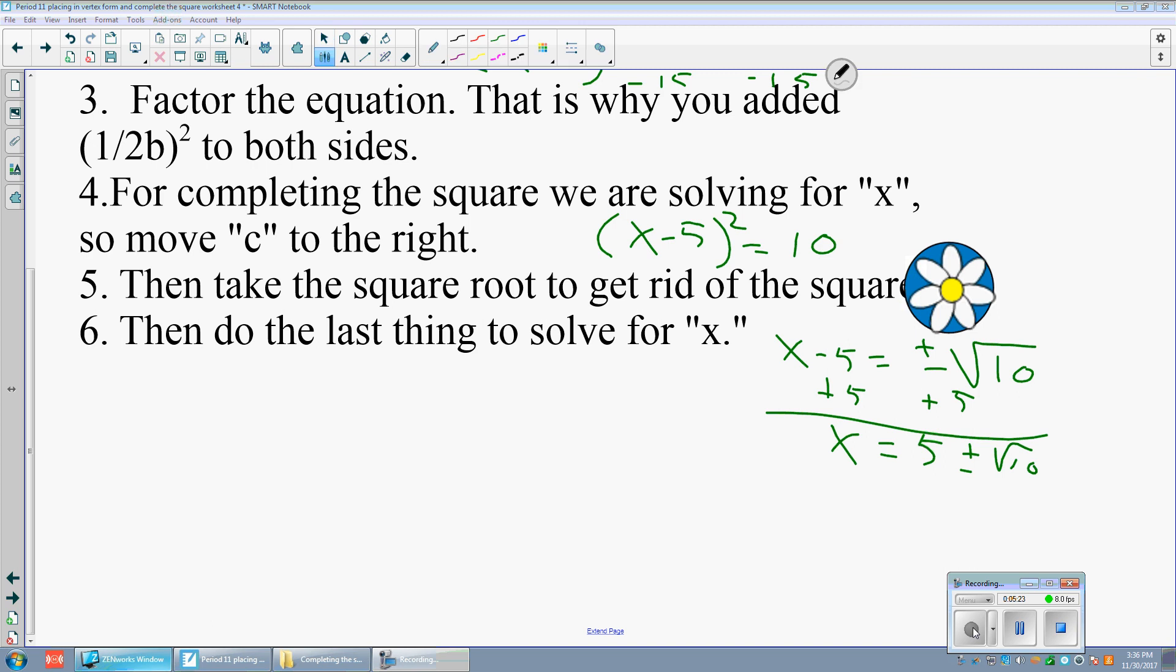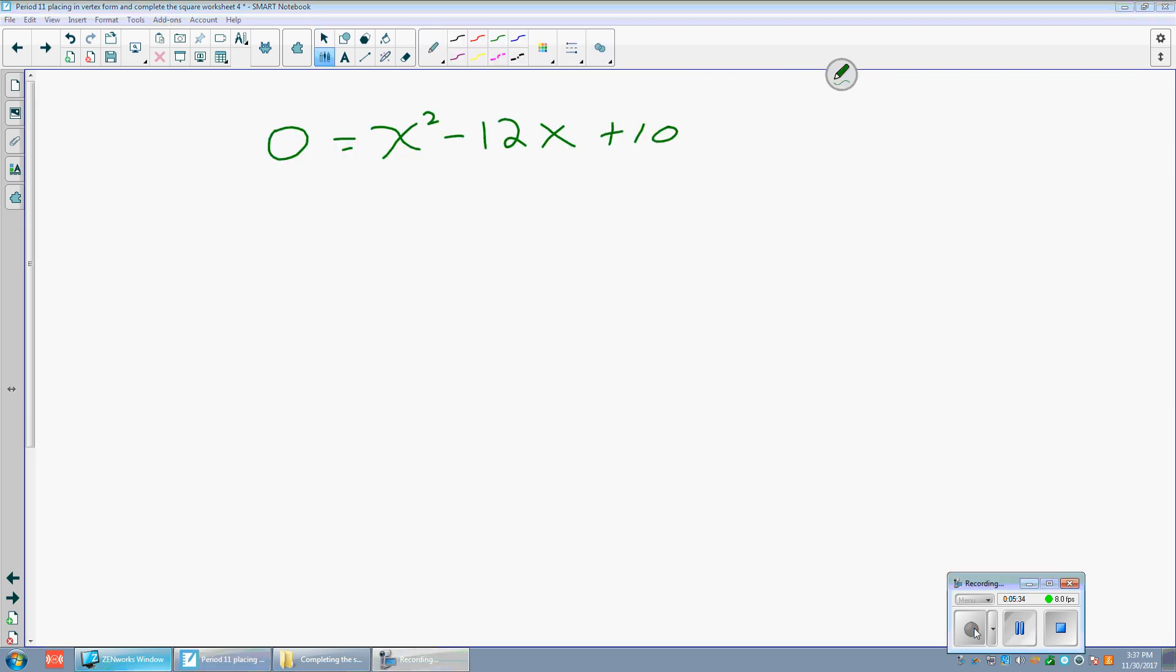Why didn't we do that for this example? Well, because the square root of 10 is an irrational number. It doesn't stop. It doesn't repeat. So we cannot simplify it any farther. Okay, ladies and gentlemen, I want you to do this question. Complete the square. Hit pause now. Go ahead. Do complete the square. Solve for x.